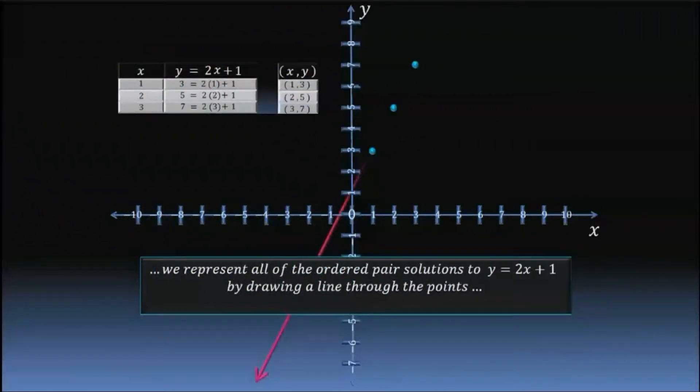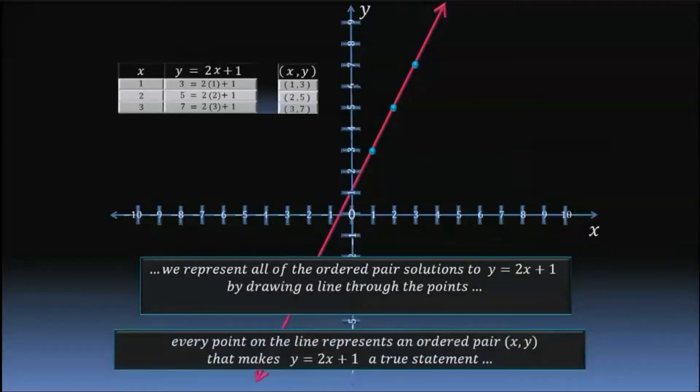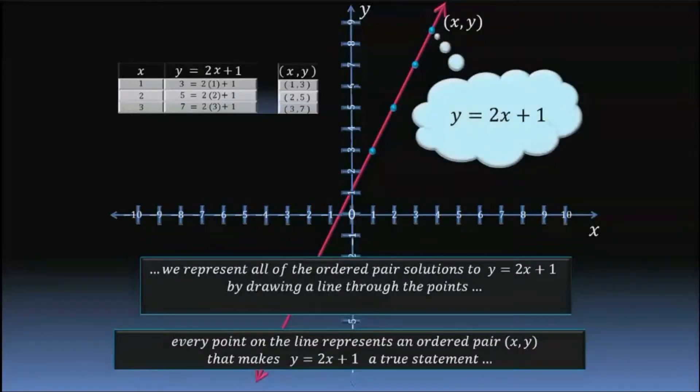Drawing a line through the points. Every point on the line represents an ordered pair x, y, that makes the equation y equals 2x plus 1 a true statement.